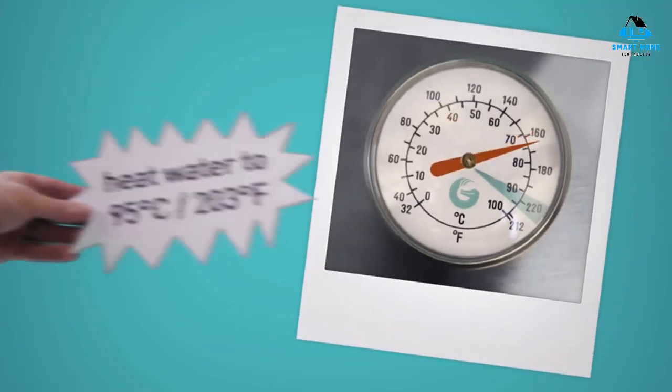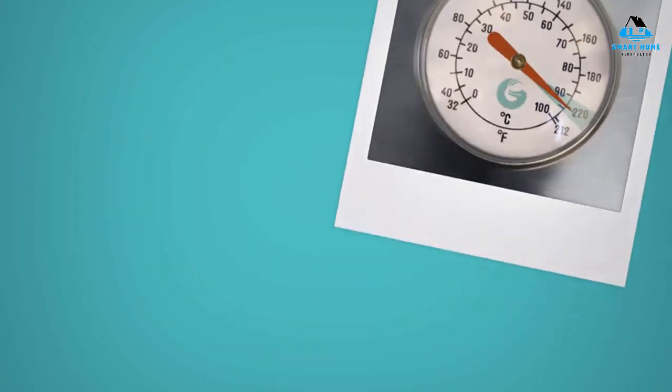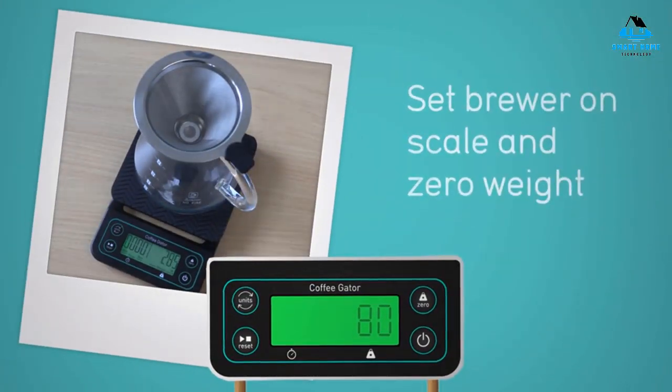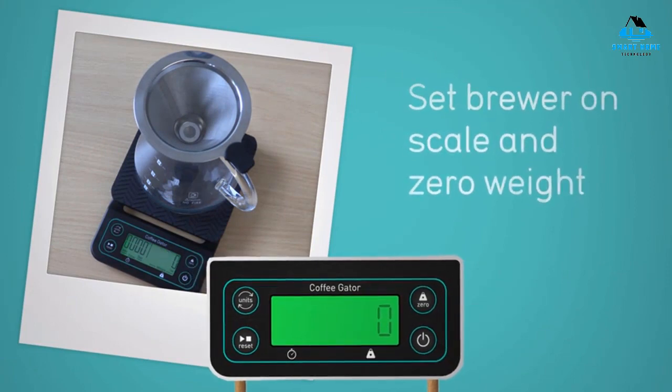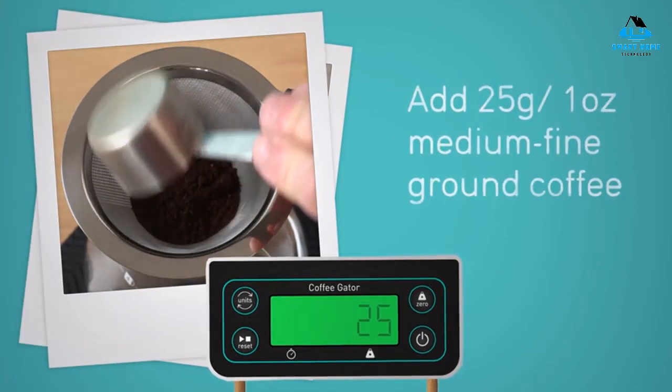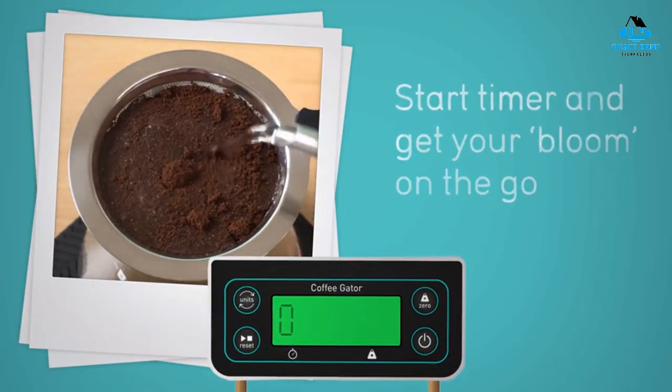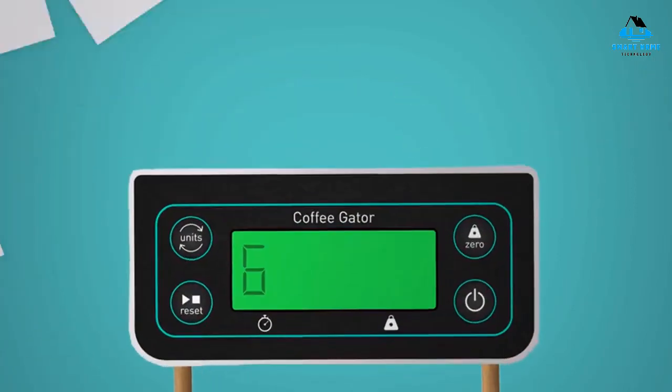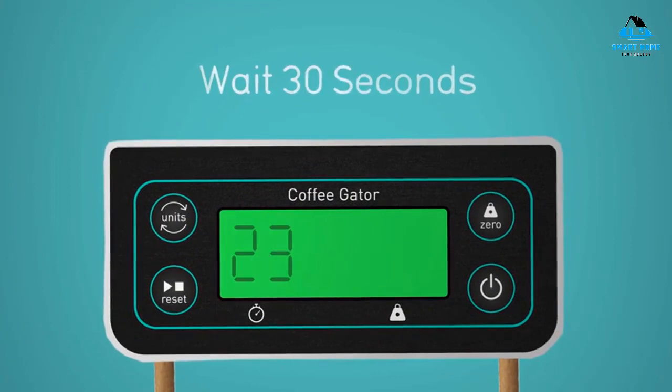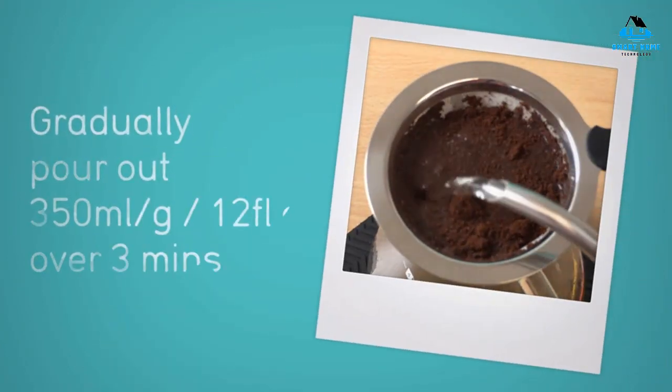A removable silicone mat protects the scale from heat and liquid should you place a pour-over on it while brewing. The scale also measures in more units than a lot of other items allow. You can easily select between ounces, pounds, grams, gram milliliters, and milliliters with the touch of a button. The other settings, timing and reset, are easy to use too because the scale has a clear and well-labeled display.